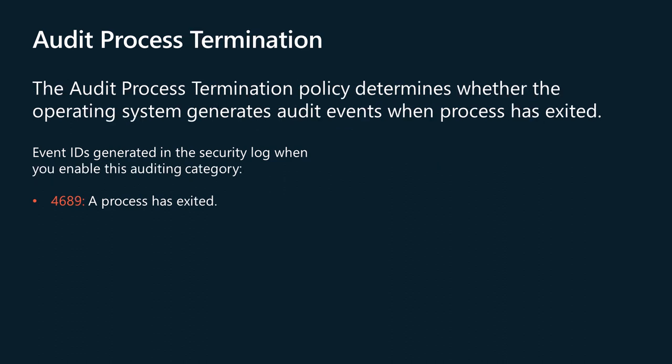The Audit Process Termination policy determines whether the operating system generates audit events when a process has exited. Success audits record successful attempts and failure audits record unsuccessful attempts. This policy setting can help you track user activity and understand how the computer is used.